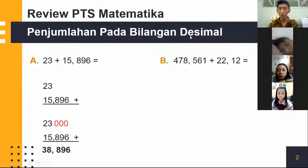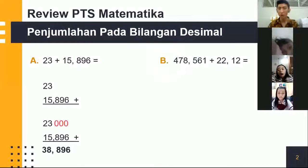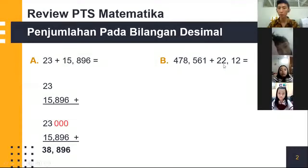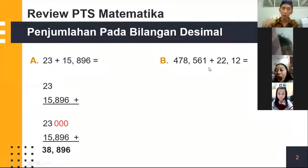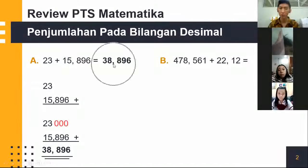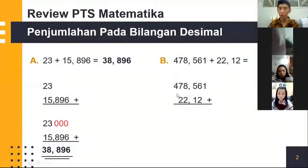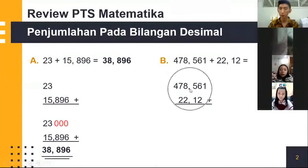Kita lanjut ke soal B. Perhatikan soal B. Di sini: 478,561 ditambah 22,12. Penyelesaiannya adalah kita harus susun dulu ke bawah seperti ini. Kita susun ke bawah: 478,561.